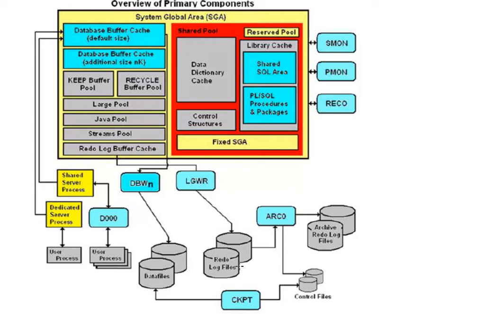If a tablespace is created and a data file is created, and you are trying to modify, insert, or update it, a record of those changes will be kept in the redo log file. If your database crashes or shuts down abruptly, these redo log files will help you recover the database to the last possible point — to the last checkpoint — so that the SCN in the control file header matches the data file headers. Control files are used to synchronize all database activities.